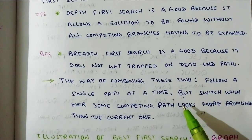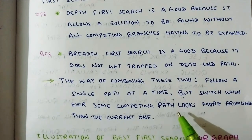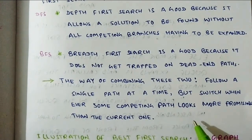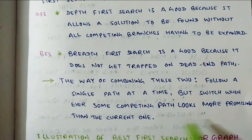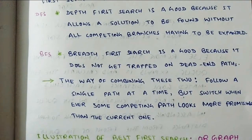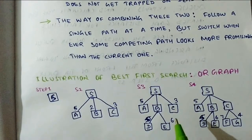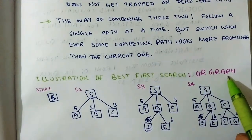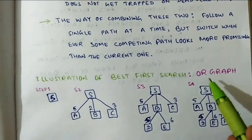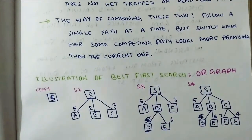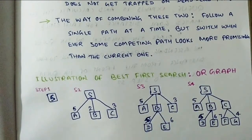Let's start from the start node, and after that, the path to follow is decided according to the heuristic value, and we switch accordingly. This is called the OR-graph technique. We can say that Best First Search Technique is based on the OR-graph technique. We will understand its purpose through a particular example and see how Best First Search Technique works.